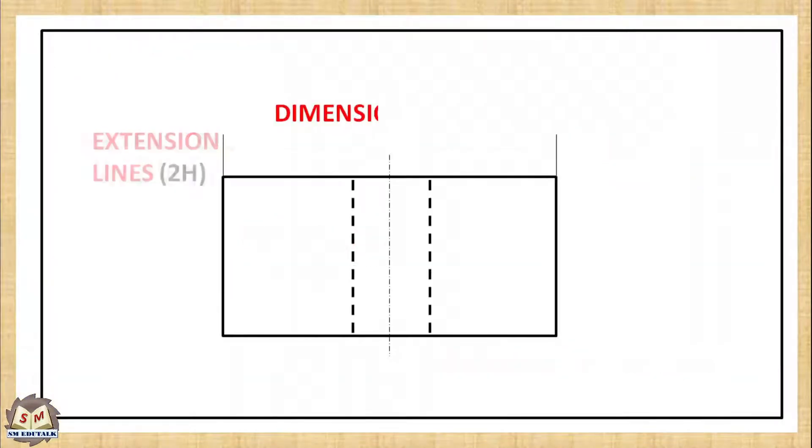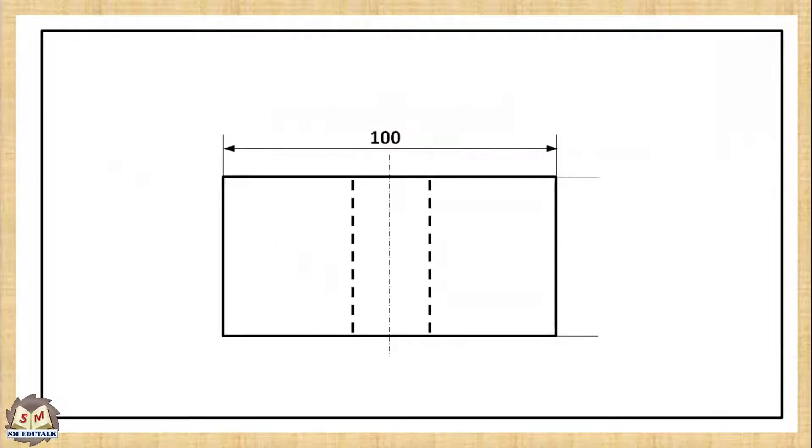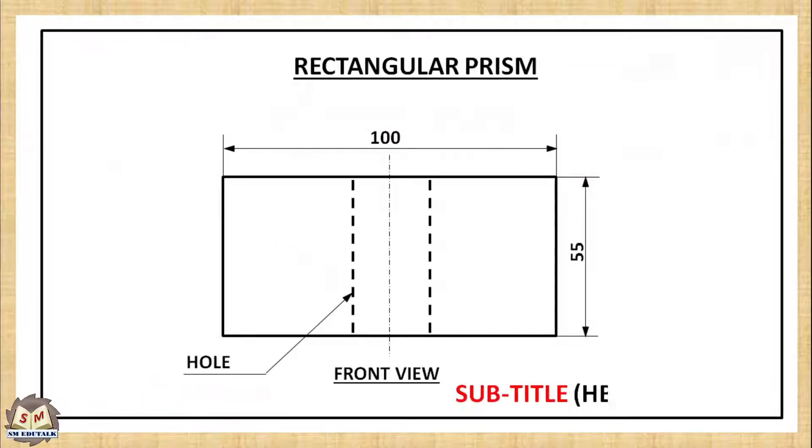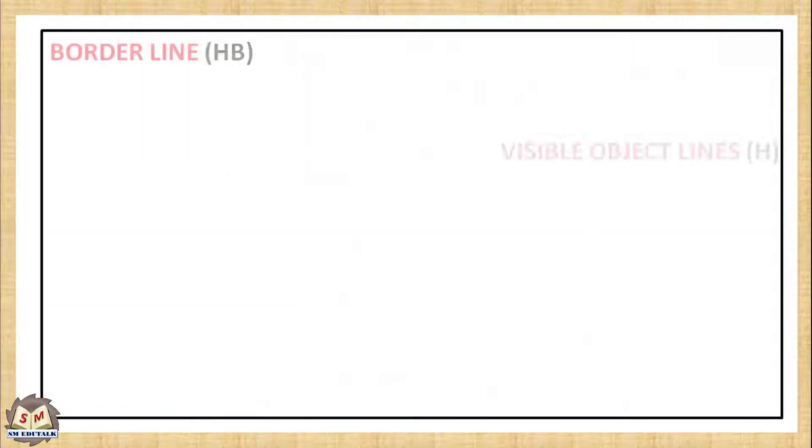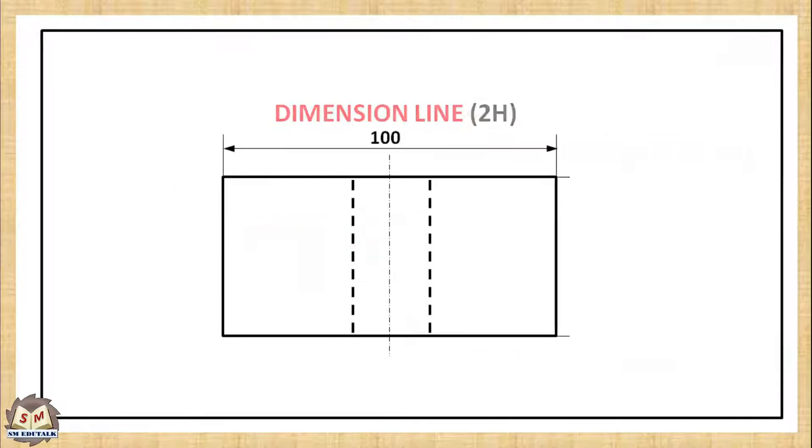For this, different conventions of lines are used to represent the details of the object accurately on the drawing. The conventions are also used to differentiate the different types of materials used for manufacturing various parts of a machine on the drawing.